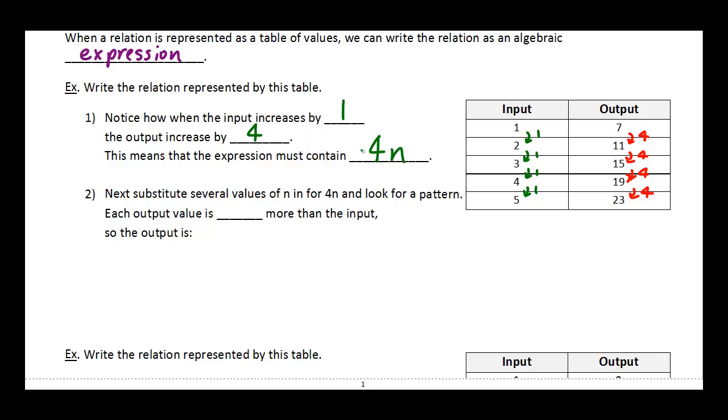The reason we know that is because if this was the final expression, then when I put 1 in, I should get an output of 4, but I don't. So what we're going to do is substitute several values for n and 4n and see if we can see what's missing. So imagine I've got some values for n. If n is 1, then 4n would be 4. If n is 2, then 4n would be 8. If n is 3, then 4n would be 12. Take a look at what I'm actually getting here. My actual output for each of those values is 7, 11, and 15. So look at what's missing here. Look for the pattern. Each of these is 3 short of my actual output. Each output value is actually 3 more than the input.